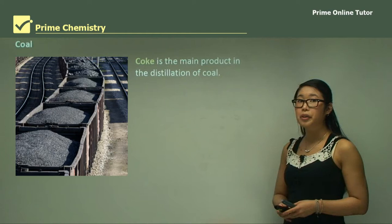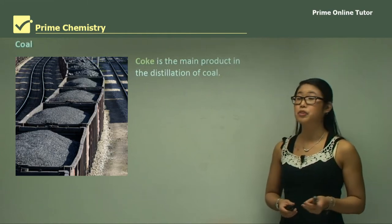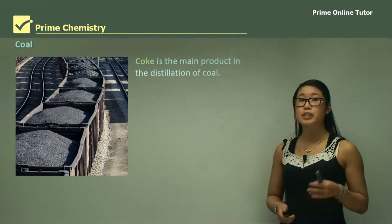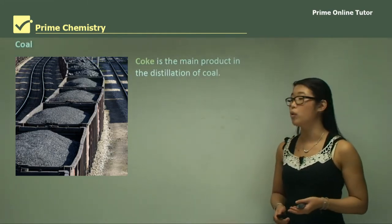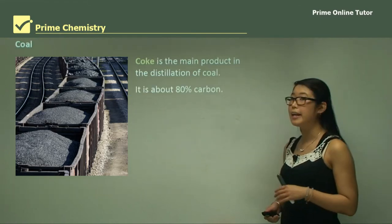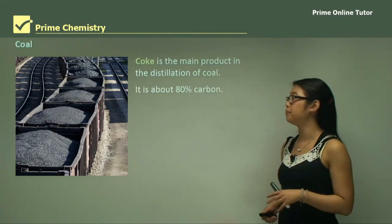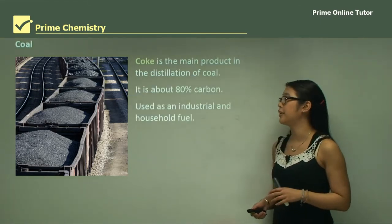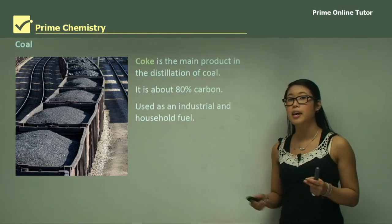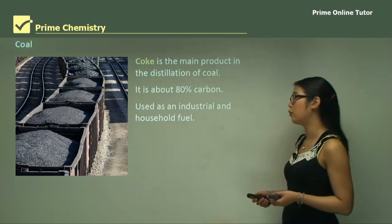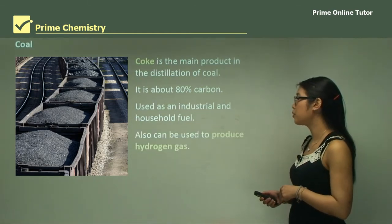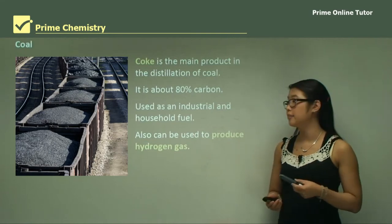Coal is a fossil fuel and coke is the main product of the distillation of coal. It's about 80% carbon and it's used in an industrial setting as well as a household fuel. It can also be used to produce hydrogen gas.